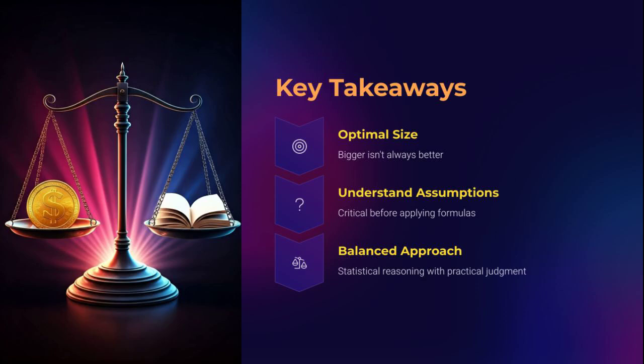Let's recap the essentials. Optimal sample size ensures scientific validity, not maximal. Understand your assumptions: effect size, variability, power, and study design. Avoid overkill — ethically, financially, and statistically. Use tools, but use them wisely. Document everything, especially for IRBs and grants. Because sample size is not just a statistical exercise — it's a scientific decision that reflects your clarity of purpose, understanding of methodology, and commitment to quality research.